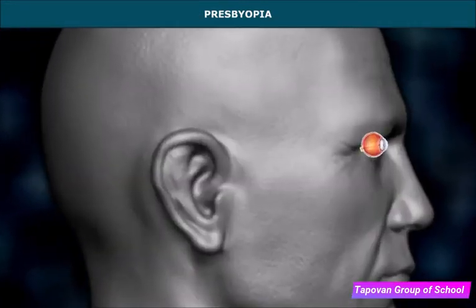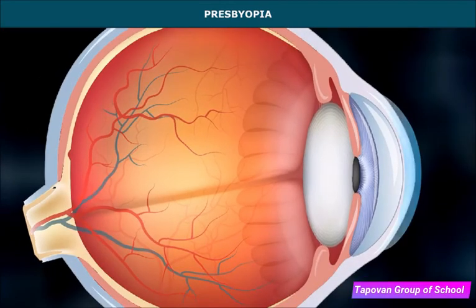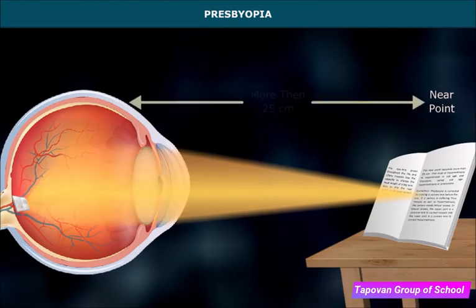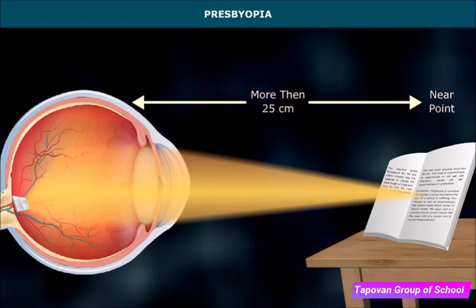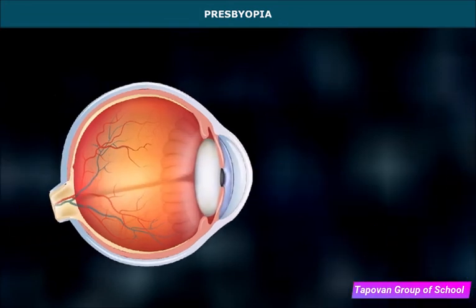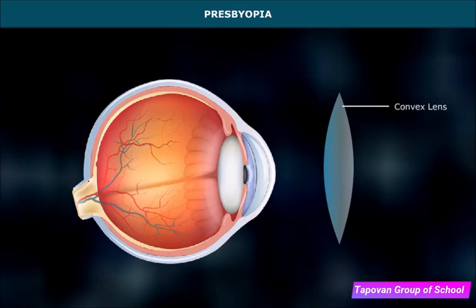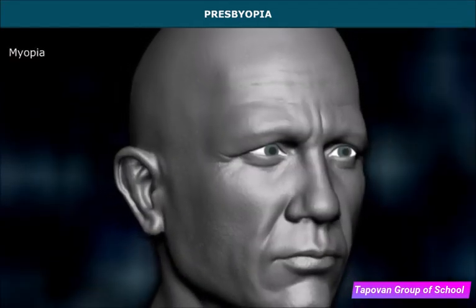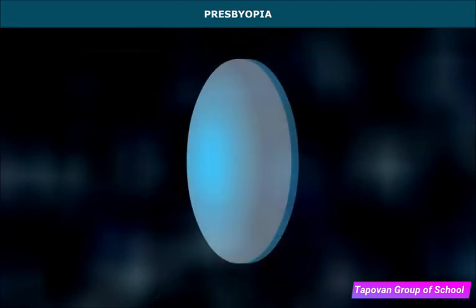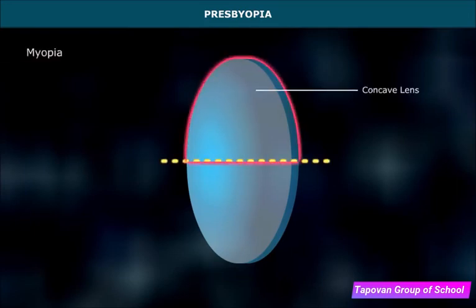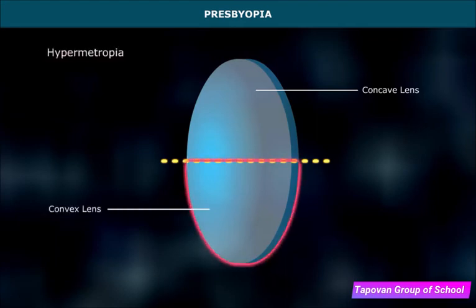Presbyopia occurs because the eye lens grows throughout life and the ciliary muscles lose the capacity to change the focal length of the larger lens. The near point of an older person recedes beyond 25 cm. This kind of hypermetropia experienced in old age is called presbyopia and is corrected by using a convex lens. If a person suffers from both myopia and hypermetropia, bifocal lenses are used — the upper part is a concave lens to correct myopia and the lower part is a convex lens to correct hypermetropia.